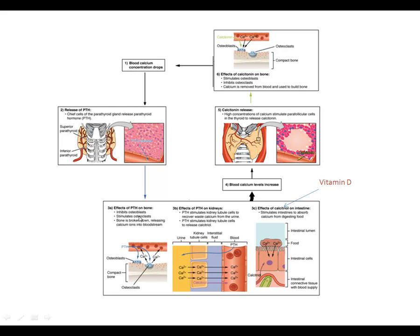In the bone, PTH inhibits the osteoblasts — the bone cells that build bone — and stimulates the osteoclasts to degrade calcium and phosphate and release it from the bone. In the kidneys, PTH does two things: it stimulates the kidneys to reabsorb calcium from the urine and to block further secretion of calcium into the urine. It also causes the kidney tubule cells to start making calcitriol, the active form of vitamin D.